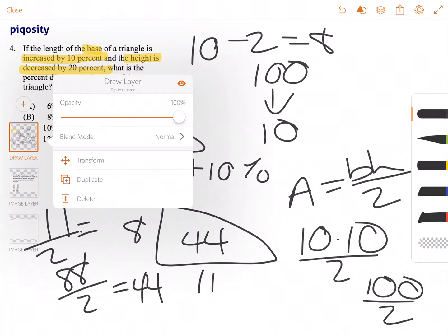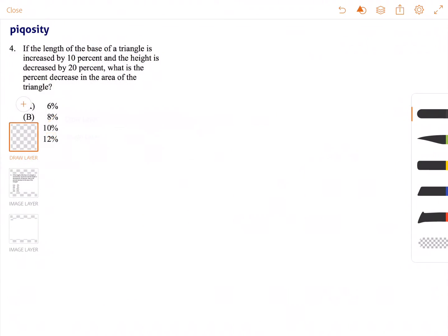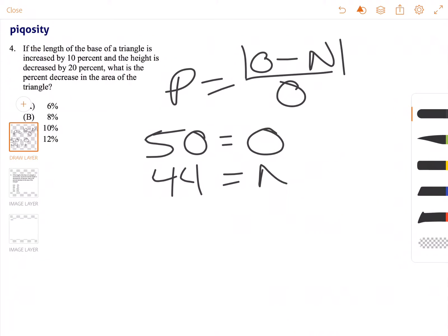So let's clear this up. And so to find the percent of change, or the percent of decrease in the case of this question, we need to use the formula P equals original minus new divided by original, and it needs to be the absolute value of that, since percentages is always positive. So our original was 50, and our new is 44.